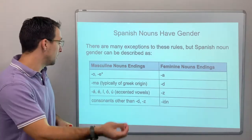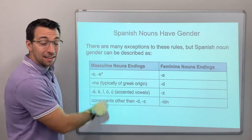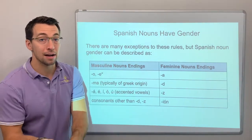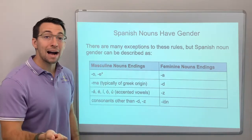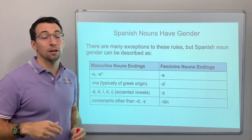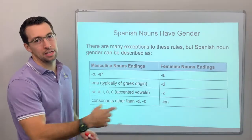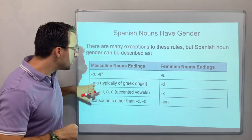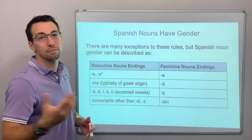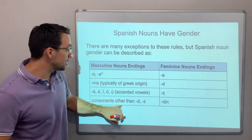Masculine exceptions include words ending in -ma, like 'problema,' 'tema,' 'sistema,' 'programa.' Even though they end in -a, -ma words are always masculine. These words evolved from Greek, where they were masculine, and Spanish adopted them keeping both the sound and the gender.